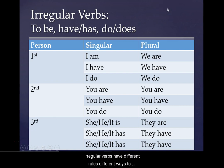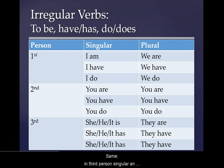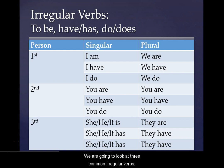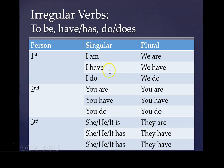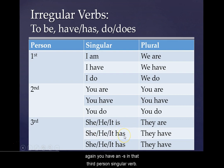Irregular verbs have different rules and different ways to conjugate, but one thing remains the same: in third person singular, an irregular verb carries an S in it somewhere. We're going to look at three common irregular verbs — the verb 'to be,' the verb 'have/has,' and the verb 'do/does.' I am, we are, you are, she/he/it is — you see that S there? They are. I have, you have, she/he/it has. Again, you have an S in that third person singular verb.